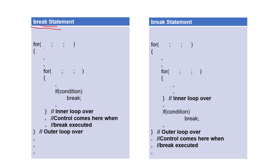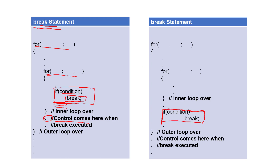Now we'll see how the execution of break works with this first example. In this example there are two loops — the first is an outer loop and the second is an inner loop. If we are using a break statement inside the inner loop and this condition is true, then this break statement will execute, and whatever statements come after it are skipped and control is given outside the inner loop. But if we use the break statement inside the outer loop but outside the inner loop, then if the break statement executes, control is given to outside the outer loop.